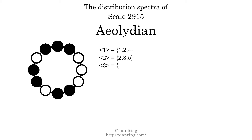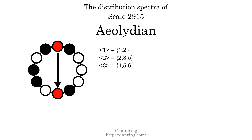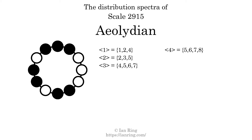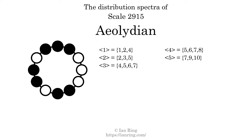The generic interval of three scale steps comes in four different specific interval sizes: four, five, six, and seven semitones. The spectrum width is three. The generic interval of four scale steps comes in four different specific interval sizes: five, six, seven, and eight semitones. The spectrum width is three. The generic interval of five scale steps comes in three different specific interval sizes: seven, nine, and ten semitones. The spectrum width is three. And finally, the generic interval of six scale steps comes in three different specific interval sizes: eight, ten, and eleven semitones. The spectrum width is three.